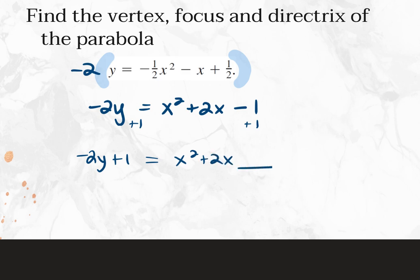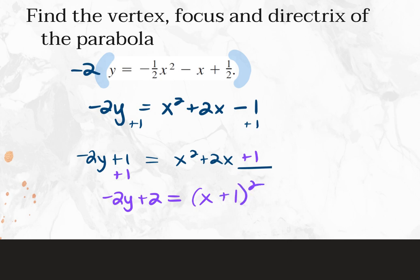After completing the square: negative 2Y plus 2 equals, and we factor the right side. Square root the first term, square root the last term, take the sign from the middle, put it in parentheses and square it. So we get (X plus 1) squared.